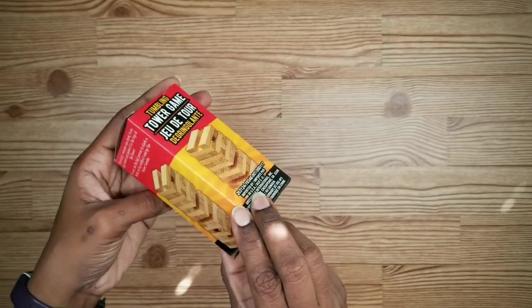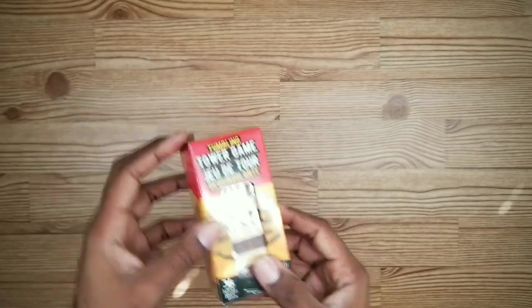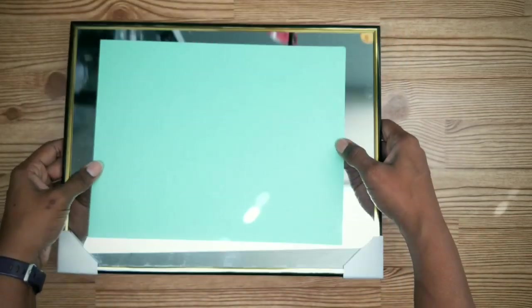For each mirror you will need two boxes of these tumbling tower blocks and one eleven by fourteen wall mirror.